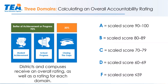Based on your overall scaled score, you'll receive an A, B, C, D, or F. Our grading bands are ones the public understands: 90 to 100 equals an A, 80 to 89 equals a B, 70 to 79 equals a C, and so on. These scaled scores correspond to rating labels that the public understands.